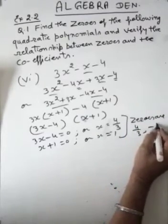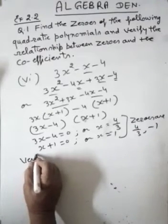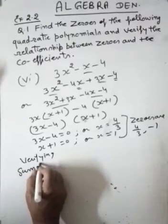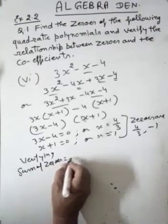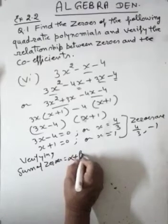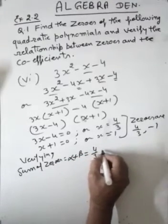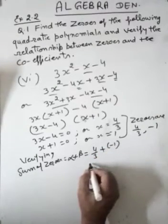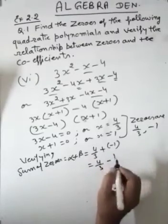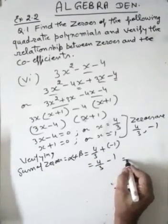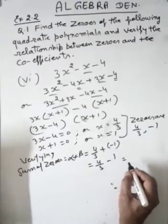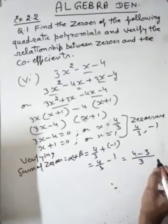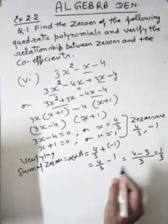So the zeros are 4 upon 3 and minus 1. The sum of zeros, alpha plus beta, is equal to 4 upon 3 plus minus 1, which is 4 upon 3 minus 1. Taking LCM as 3 and solving, it becomes 4 minus 3, that means the answer is 1 upon 3.